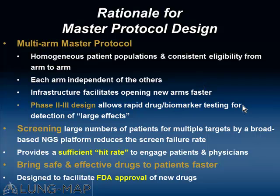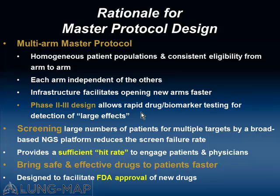We want a very strong infrastructure, and so many people have worked to bring this to bear. We wanted to allow a phase two to three design to allow for rapid drug biomarker testing, and we want to see large effects. We're going to screen a large number of patients — I've always thought one of the best ways to get molecular profiling into the mainstream is to screen patients from all over the country. We're going to screen as many as 1,250 patients a year, using a next-generation sequencing platform selected through an RFA mechanism. We're using Foundation Medicine, and we hope to have a sufficient hit rate to engage patients and physicians.